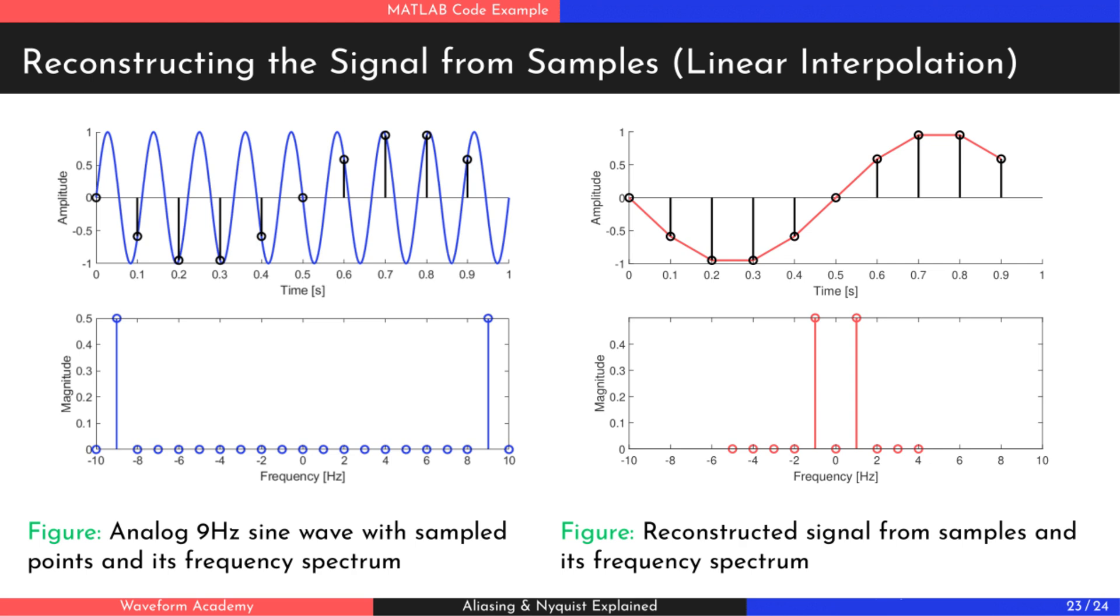As you can see in the right-hand plot, the reconstructed wave has a frequency of 1 Hz, not the original 9 Hz. This discrepancy is due to the aliasing effect.